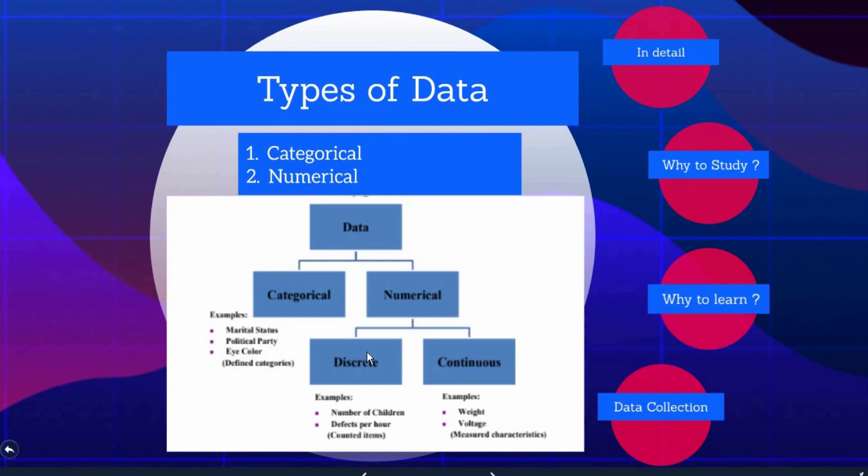And again numerical variables are further divided into discrete and continuous. And you can also see the examples of categorical here. Like marital status. Are you married or no? It is categorical. And political party. We have political parties like TRS, TDP, Congress, BJP. All these are categorical. And eye color. And there are eye colors like blue, orange, blackish or blackish brown. All these are categorical variables.